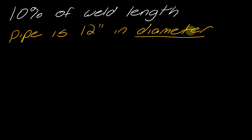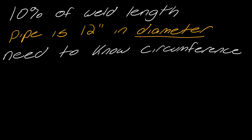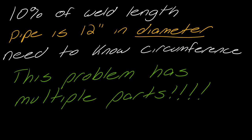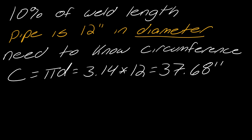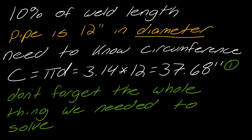The problem mentions a diameter, so we need to know the circumference. That's why you need to have mastered these prerequisite skills. This problem has multiple parts: first, figure out the circumference; then figure out 10% of the weld length. So let's find the circumference: π × D = 3.14 × 12, which gives us 37.68 inches.